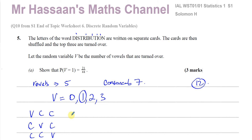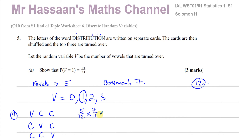We're taking a card and not replacing it. For the first scenario — vowel first — that's 5 out of 12. The second pick is a consonant; there are now 11 cards left and still 7 consonants, so 7 over 11. For the third pick, 10 cards remain, and since we removed one consonant, there are 6 consonants left, giving 6 over 10.